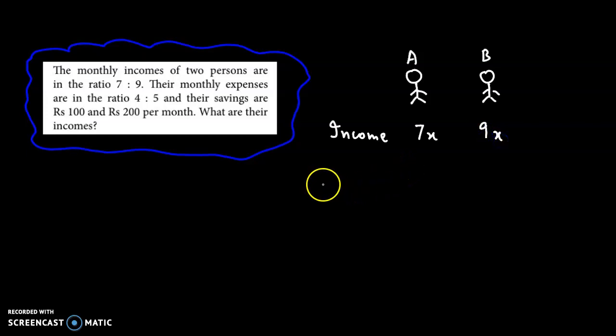Their monthly expenses are in the ratio 4 to 5, and their savings are rupees 100 and rupees 200 per month. So savings are 100 and 200.